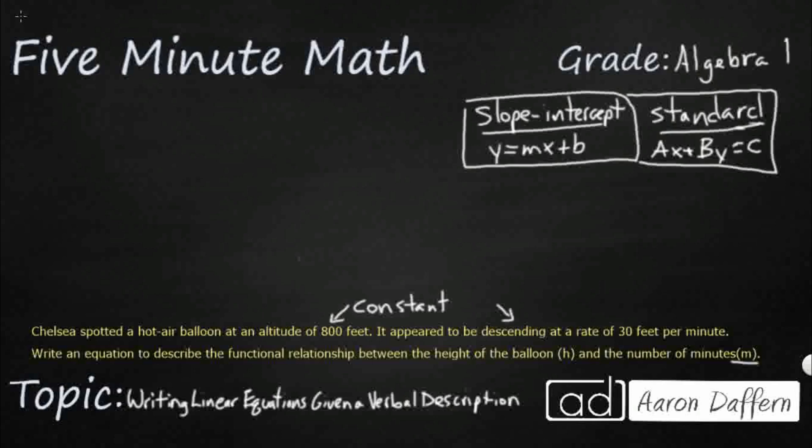So it's going to have a downward slope at a rate of 30 feet per minute. And look at the number of minutes. It's going to be m. So we already have a coefficient right there, 30, and we have one of our variables because we're going to multiply this 30 by the m.